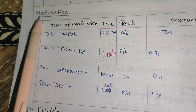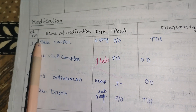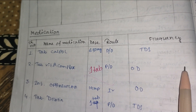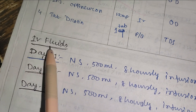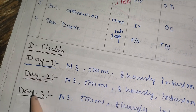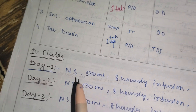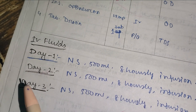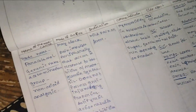After investigation, the next point is medication. The medication table includes: serial number, name of the medication, dose, route, and frequency. If the patient had IV fluids, mention them for day 1, day 2, and day 3 — a minimum of 3 days. For each medication given to the patient, an elaboration or explanation should be provided.